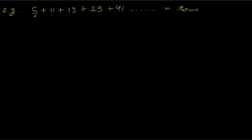First, let's try to find what kind of series this is. What is the common difference? 11 minus 5 is 6, 19 minus 11 is 8, 29 minus 19 is 10, and 41 minus 29 is 12. So the common difference is not fixed. Therefore, this is not an AP.